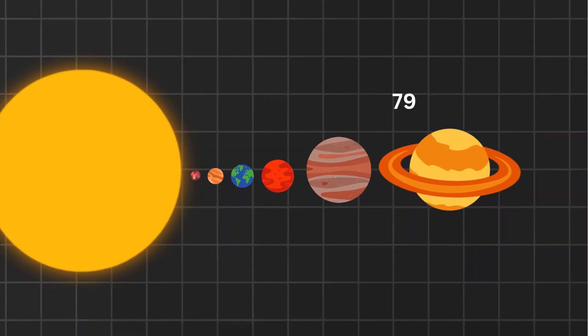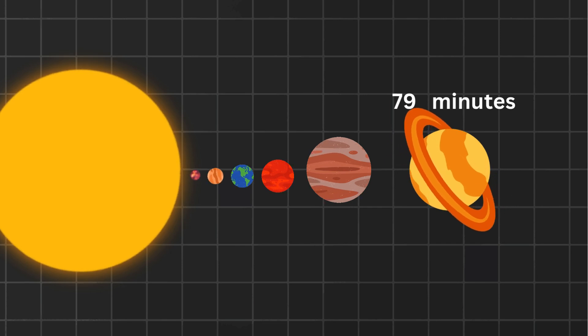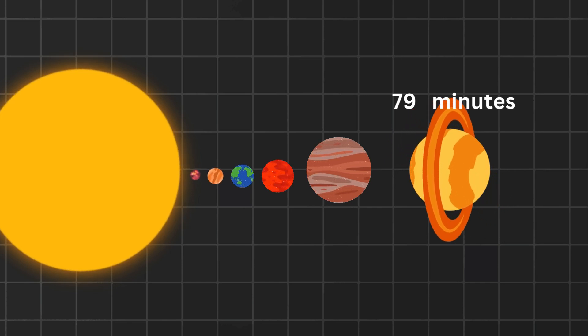Saturn's sunlight is almost an hour and a half old by the time it arrives. 79 minutes to be exact. If Saturn had life, they'd be watching an hour-old version of the sun.